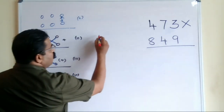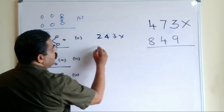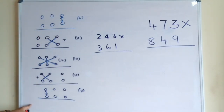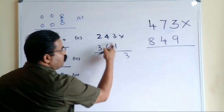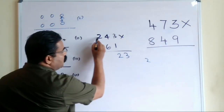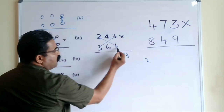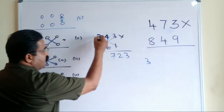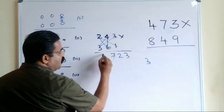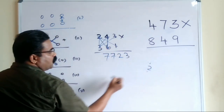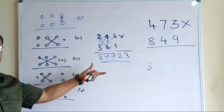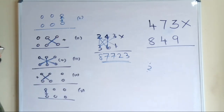Let us do one more example: 243 multiplied by 361. Applying the steps mentally: 3, then 4+18=22 carry 2, then 2+9+9+2 = carry steps giving 37 carry 3, then 12+12=24+carry giving 27 carry 2, then 6+carry = 8. Answer: 87,723. It is very easy to calculate the product of a three-digit number using Vedic mathematics.